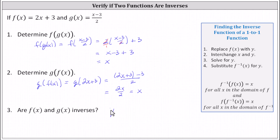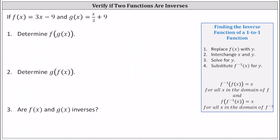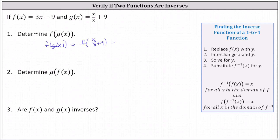The answer to number three is yes. Now let's look at a second example. Here we're given f of x equals 3x minus 9, and g of x equals x divided by 3 plus 9. Once again, we want to find f of g of x as well as g of f of x. To determine f of g of x, we begin with the inner function g of x, and because there's no numerical value as an input, we replace g of x with the function rule, indicating f of g of x equals f of x divided by 3 plus 9. That expression becomes the input for f of x, so we substitute x divided by 3 plus 9 for x in f of x.